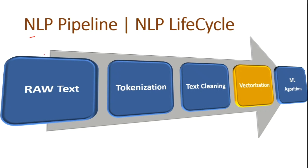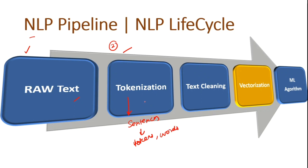NLP is a process and this process has several steps. The first is raw text — that is what we get as a dataset. We have to extract information from the raw data. In the second step, we perform tokenization. Tokenization is a process in which we create tokens from the raw text. First we convert the paragraph into sentences, and once sentences are formed, we create tokens — or words. So we go from paragraph to sentences, then sentences to words.